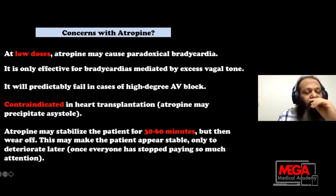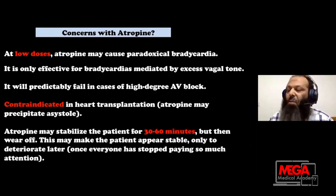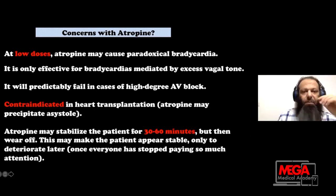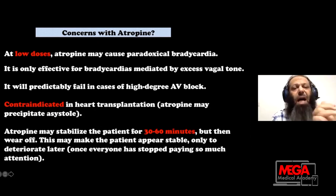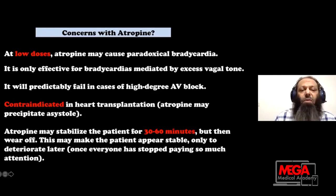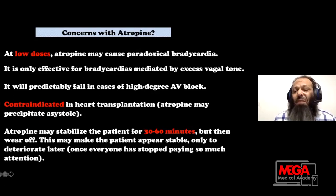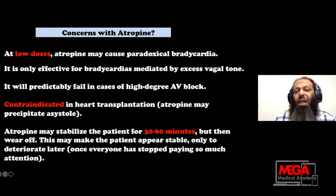We habitually call for atropine when facing bradycardia. However, the concerns about atropine: at low doses, atropine may cause paradoxical bradycardia — this is very important. It is only effective for bradycardia mediated by excessive vagal tone, and will predictably fail in cases of high-grade AV block. You should not give atropine for high-grade or third-degree AV block because atropine will not act on high-grade AV block.